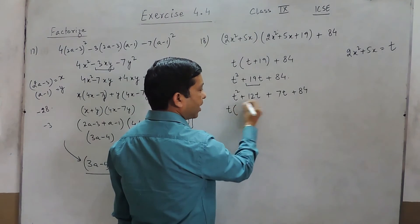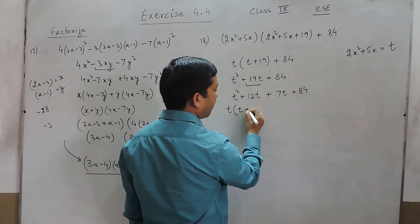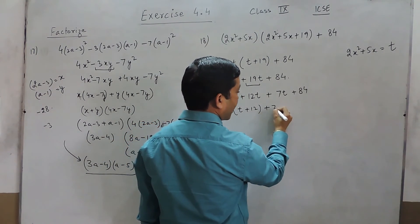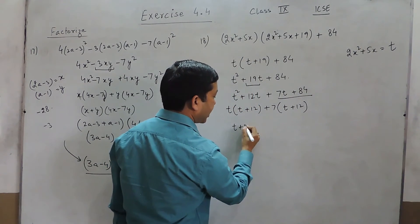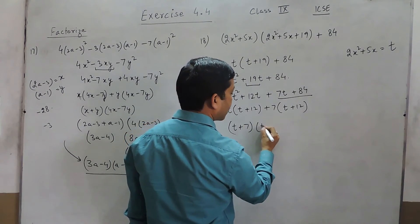When I take t common in the first two terms it is t(t + 12). When I take plus 7 common in the last two terms again it is 7(t + 12). So the answer becomes (t + 7)(t + 12).